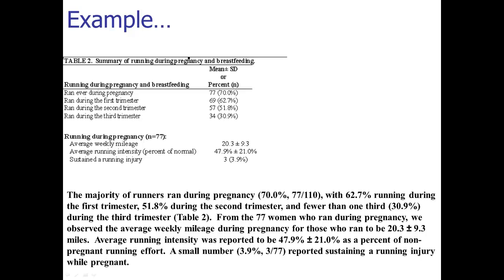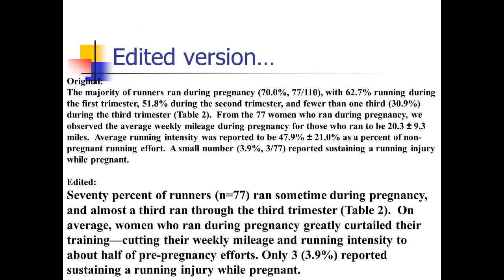The revised version: '70% of runners ran sometime during pregnancy, and almost a third ran through the third trimester (table 2). On average, women who ran during pregnancy greatly curtailed their training, cutting their weekly mileage and running intensity to about half of pre-pregnancy efforts.' Rather than repeating the exact numbers, I quantify it as about half the pre-pregnancy effort. Then: 'Only three reported sustaining a running injury while pregnant.' I pick and choose the most important numbers to highlight and provide complementary numerical information.